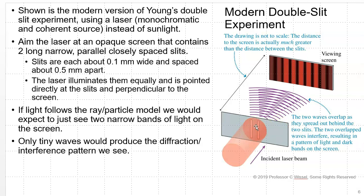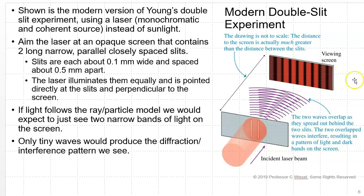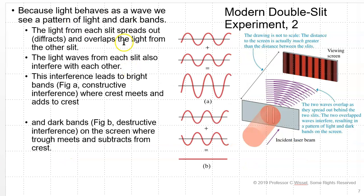Now we can use lasers. Lasers are monochromatic and totally coherent. We aim the laser at an opaque screen containing two long, narrow, closely spaced slits — each about 0.1 millimeter wide and spaced about 0.5 millimeter apart. The laser illuminates them equally and is pointed directly at the slits, perpendicular to the screen. If light follows the ray particle model, we would just see two bands. Instead, we see a weird pattern of multiple alternating dark and light bands. The only way to get this pattern is if light is a wave, producing a diffraction or interference pattern.